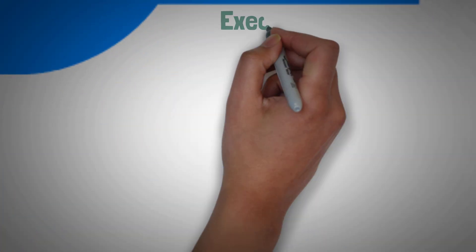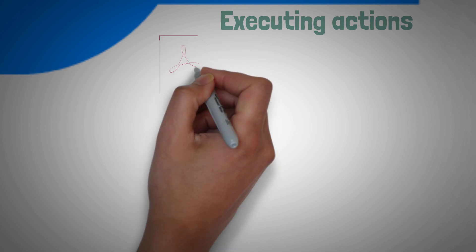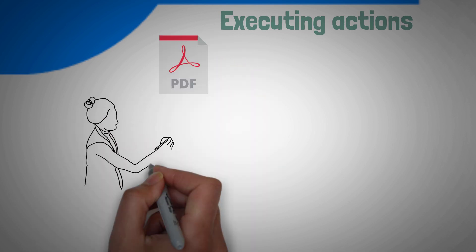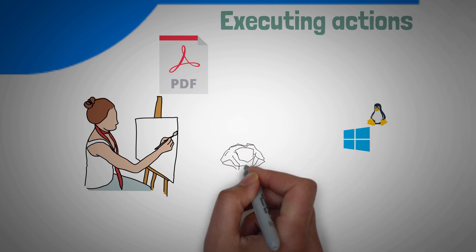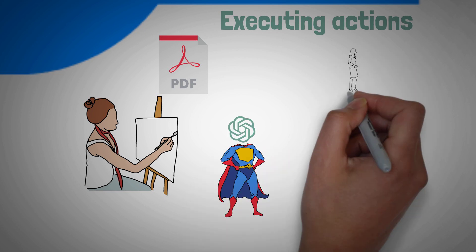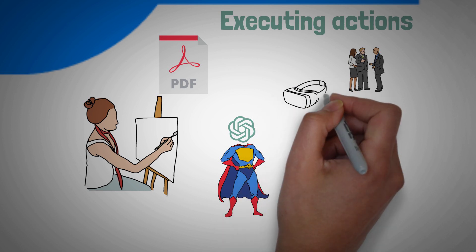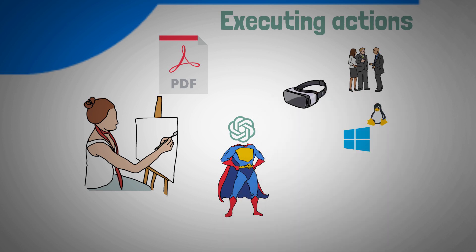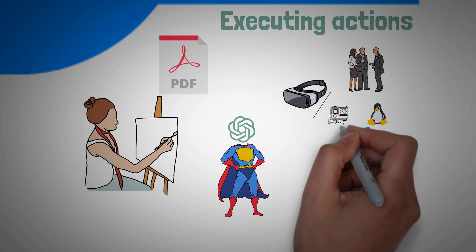Executing actions: AI agents can generate PDF reports, execute complex processes, or even manage your operating system. The power of agents happens when each agent communicates with other agents to cooperate on specific tasks. This autonomous execution sets them apart from more passive technologies, enabling the automation of more complex tasks.